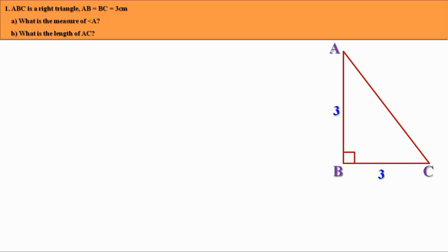Given that ABC is a right angle triangle, and also given that AB and BC are equal, therefore it is an isosceles right angle triangle. Hence, the remaining two angles are equal and they are equal to 45 degrees. Therefore, angle A equals 45 degrees.